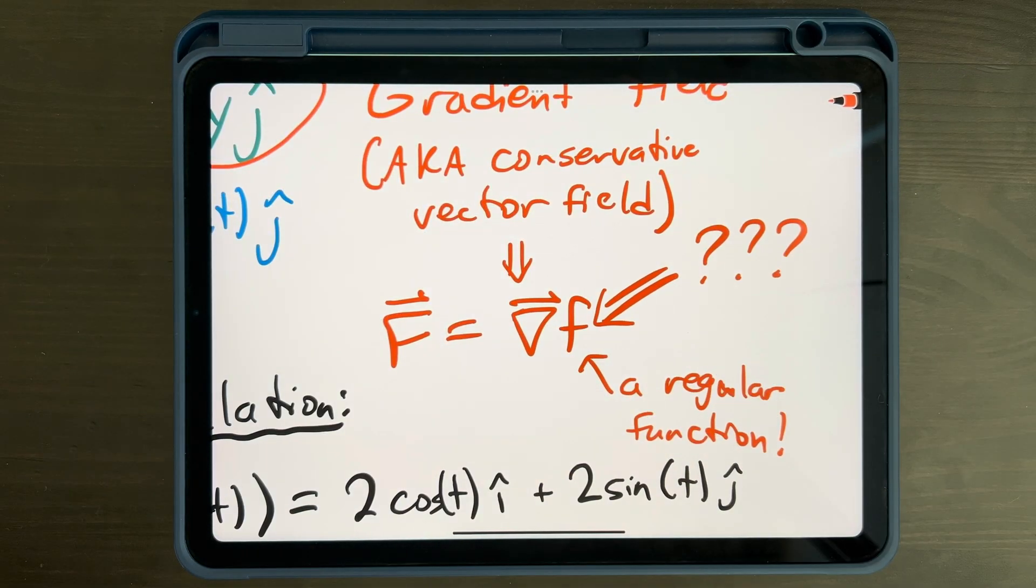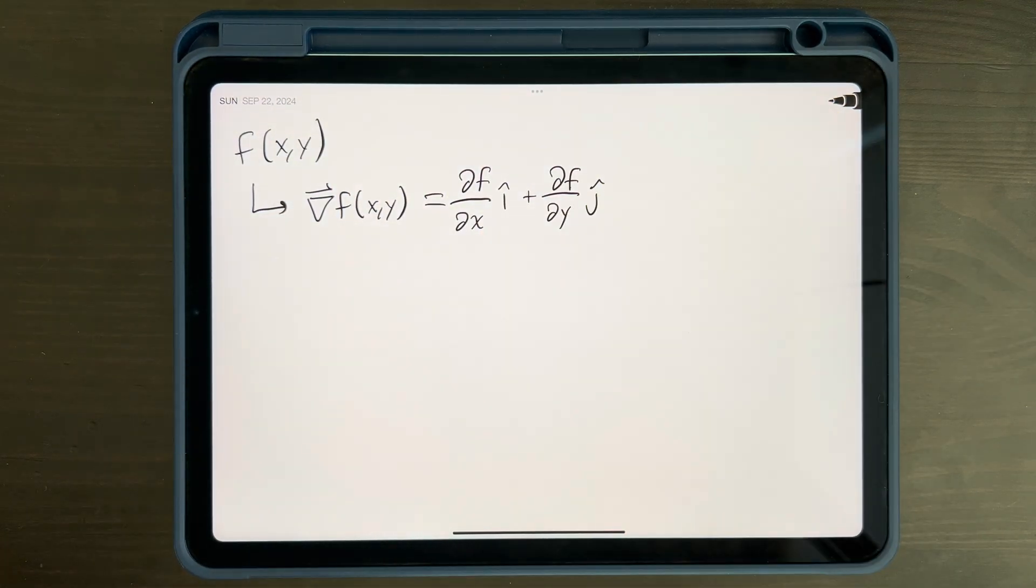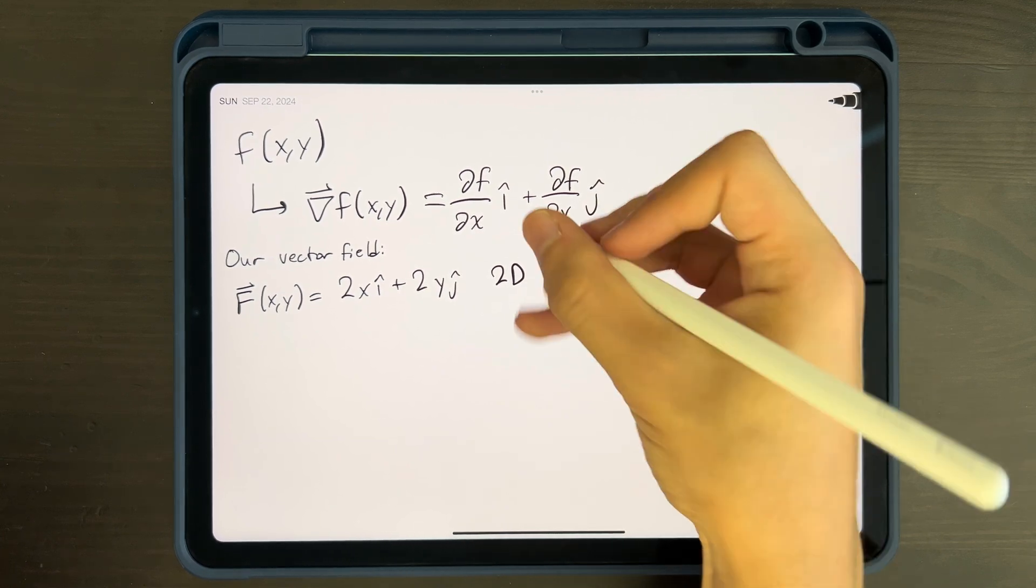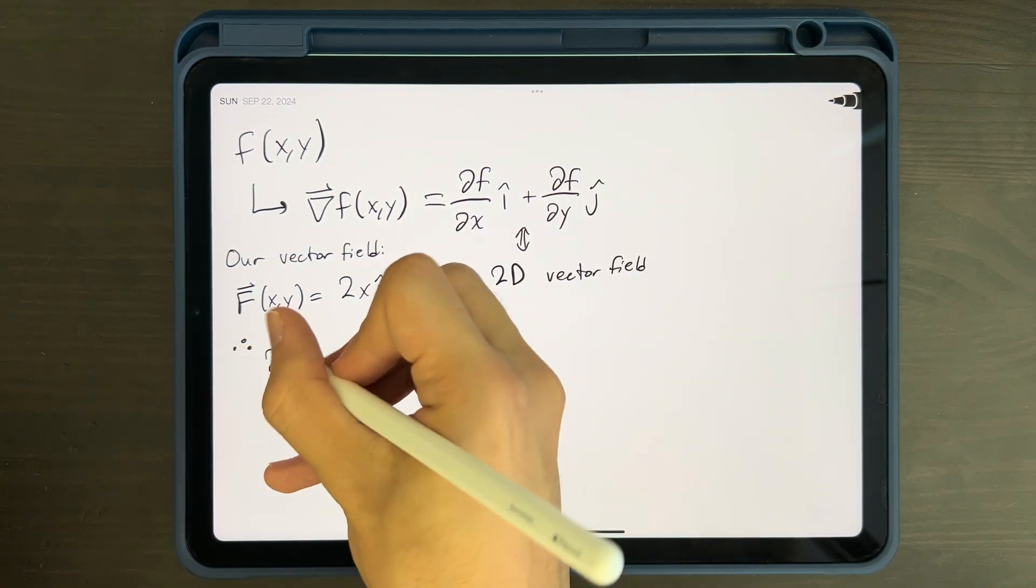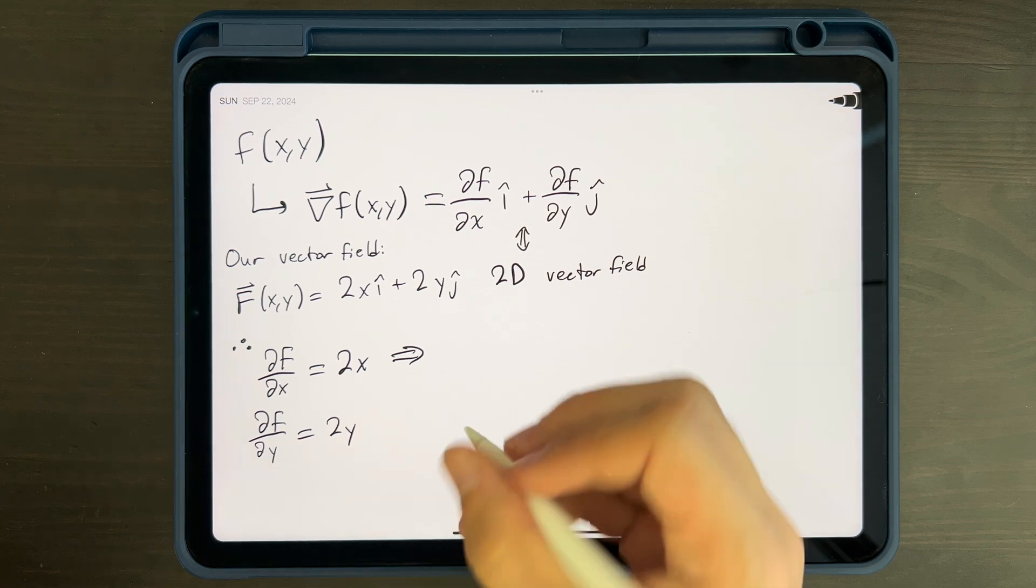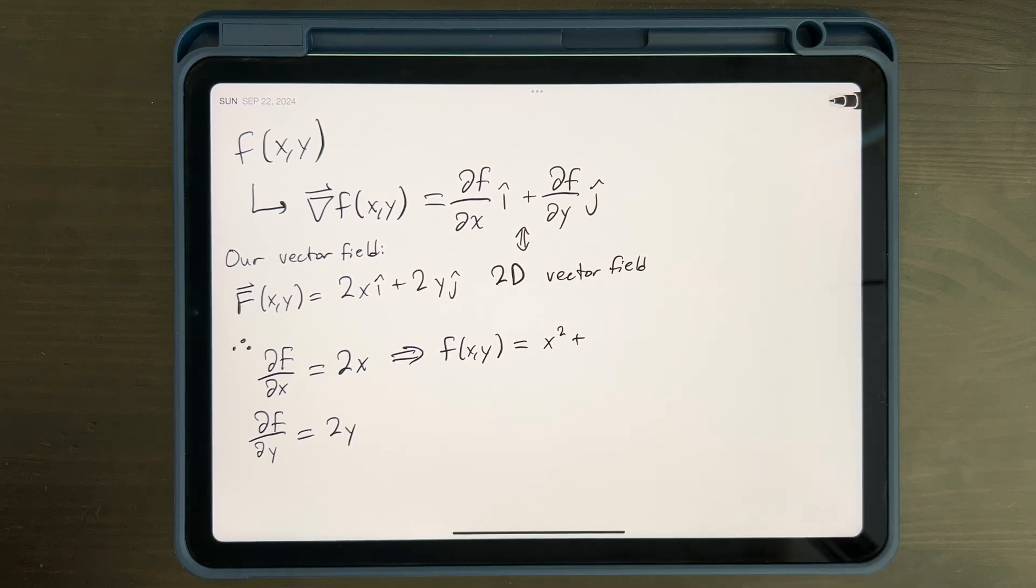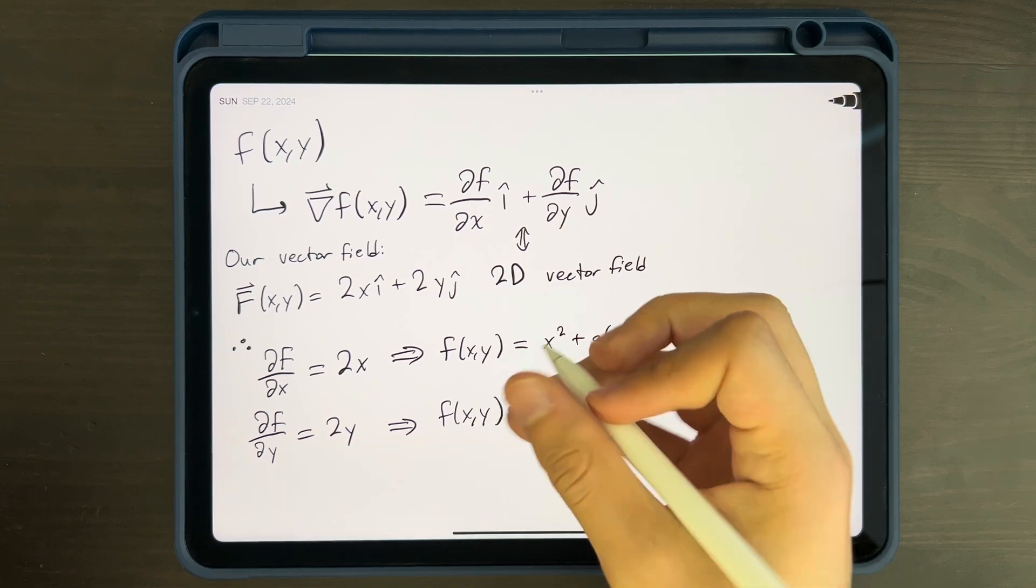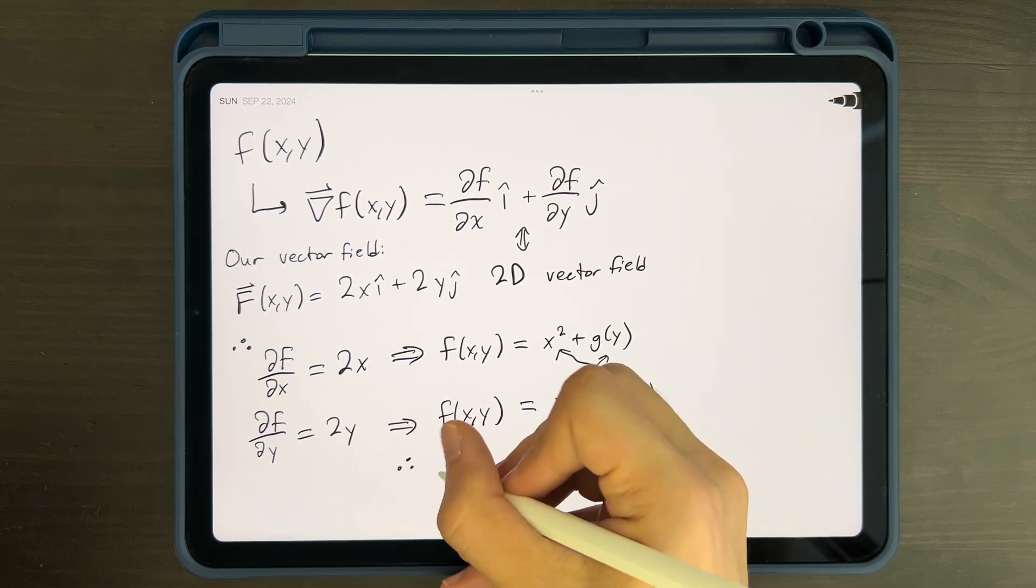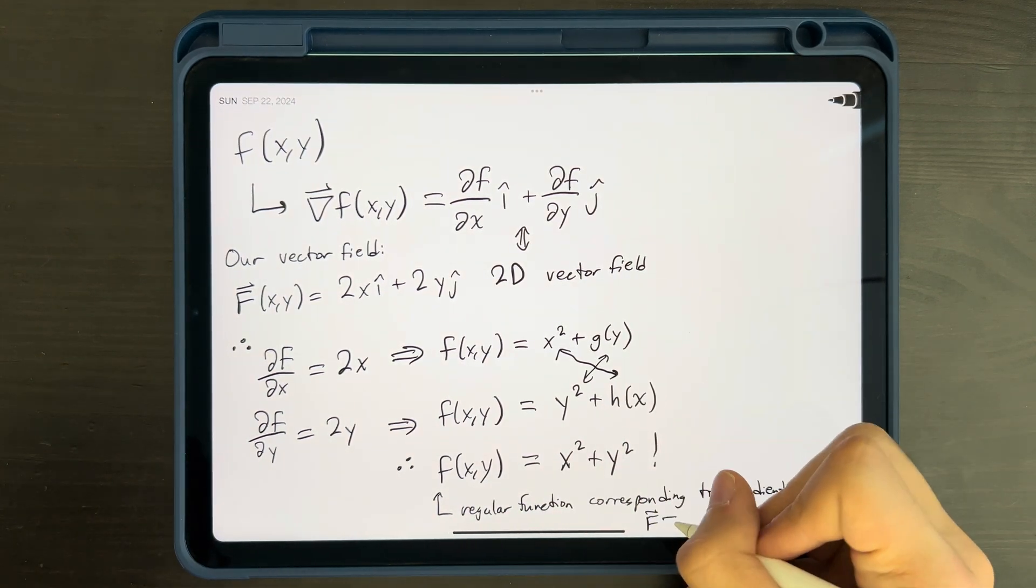What function is that? Well, we can do some math to figure it out. Remember that the gradient is just a vector concatenation of the partial derivatives of a regular scalar function. Since this gradient is 2D, our function must have a 2D input space, or 2D input variables x and y. The i hat component is df/dx, while the j hat component is df/dy. Integrating these two differential equations, we can see that the i hat component tells us that our regular function f must be equal to x squared plus some function of y. The j hat component tells us that f must be y squared plus some function of x. These two notions are compatible, meaning that a regular function is just x squared plus y squared. You can verify yourself that the gradient of this function is 2x i hat plus 2y j hat.